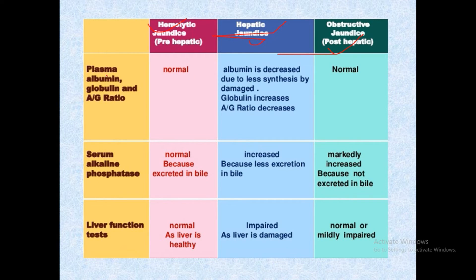Regarding plasma proteins: since most plasma protein synthesis occurs in the liver, in pre-hepatic jaundice the liver is normal, so albumin, globulin, and albumin-to-globulin ratio are all normal. In hepatic jaundice, liver cells are damaged, so albumin synthesis decreases while globulin increases comparatively, resulting in a decreased albumin-to-globulin ratio. In post-hepatic jaundice, the albumin-to-globulin ratio is normal.